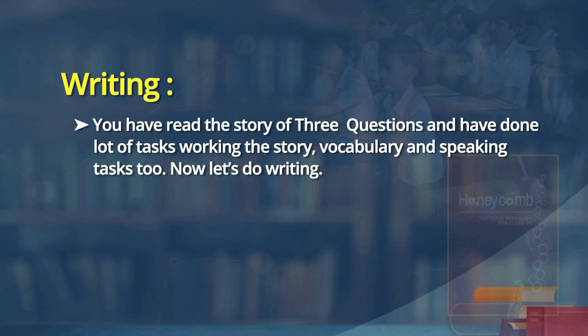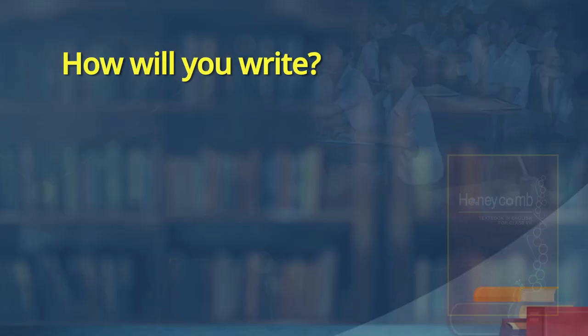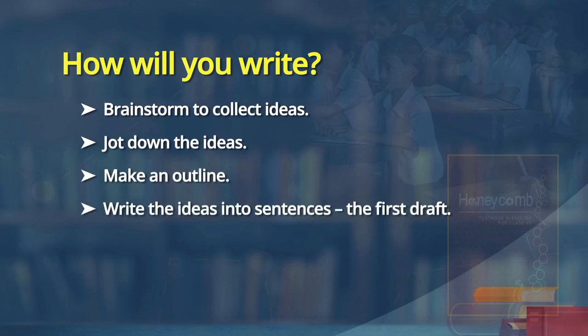You have done lots of activities — vocabulary, reading the story, speaking, and narrative activities. You narrated the event as a speaking activity; now you are going to write it. You narrated the event as the king and as the hermit. Now you are going to write it. Writing does not come as magic all of a sudden — we have to follow a process. First, you brainstorm from the reading and summary of the story, then you spoke, and now you write. You brainstorm, jot down ideas, make an outline, write ideas into sentences, then write a first draft, revise the draft, and proofread and improve it.